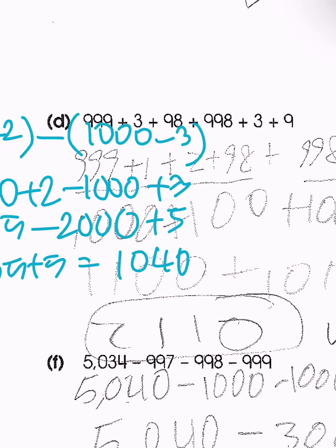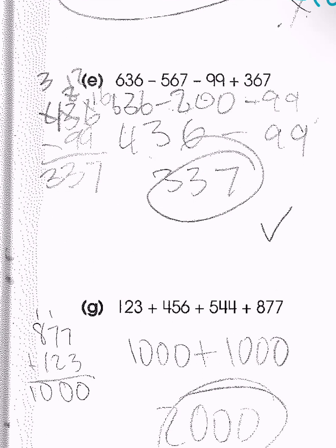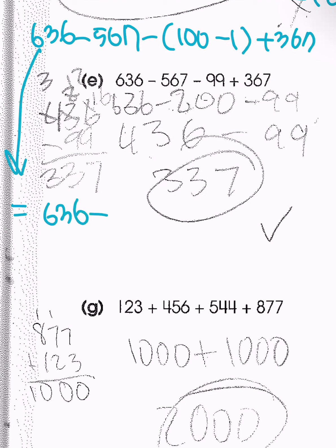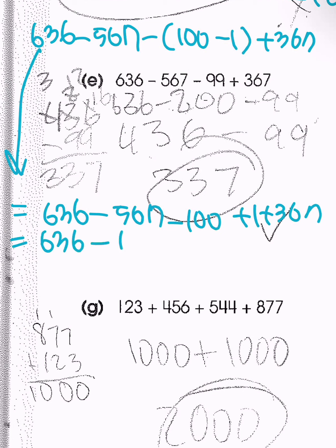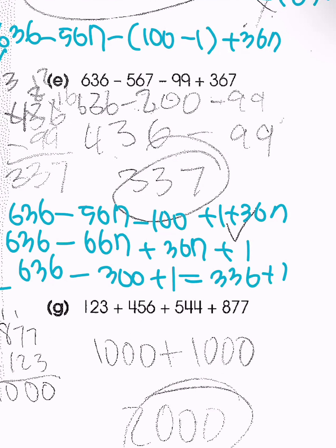Problem D is also a similar type, so solve it on your own. For problem E, we have 636 minus 567 minus 99 plus 367. We can express 99 as 100 minus 1, giving 636 minus 567 minus 100 plus 1 plus 367. Rearranging — since 567 and 367 both end in 7 — gives 636 minus 300 plus 1 = 336 plus 1 = 337.